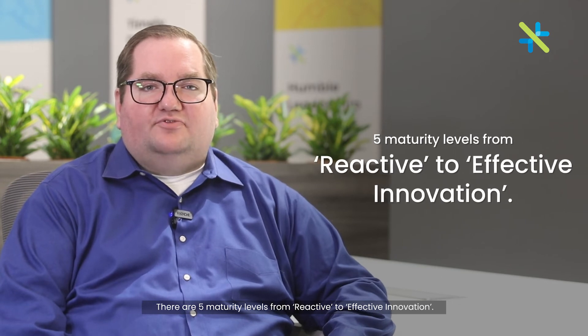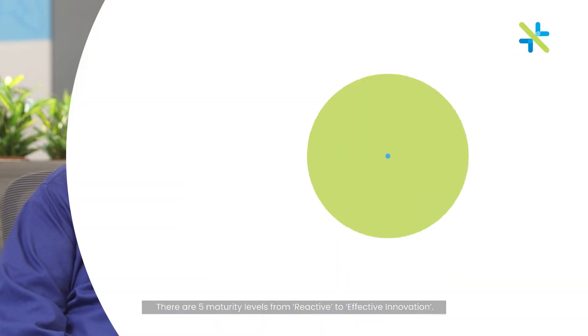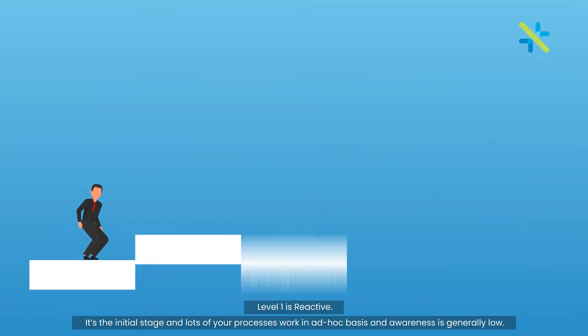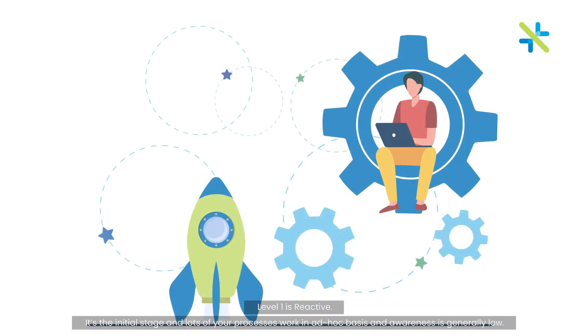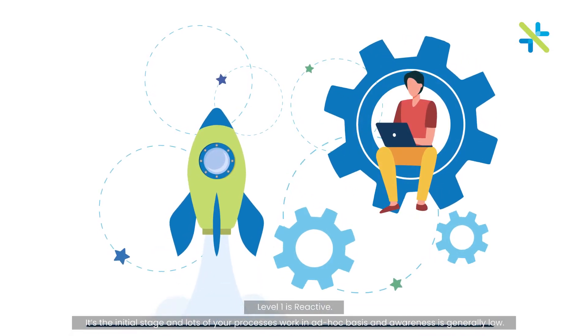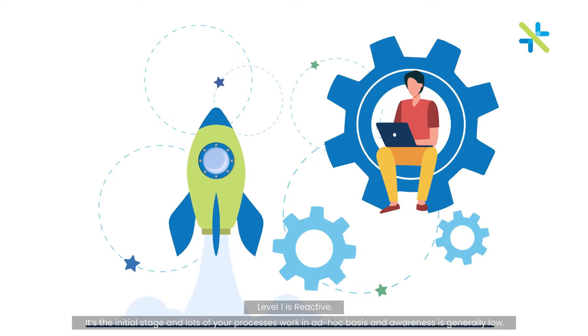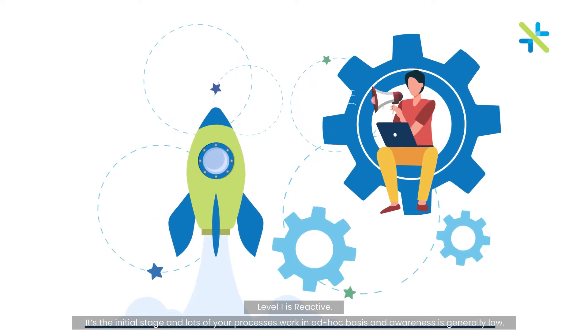There are five maturity levels, from reactive to effective innovation. Level 1 is reactive — it is the initial stage where lots of your process work is done on an ad hoc basis, and awareness is generally low.